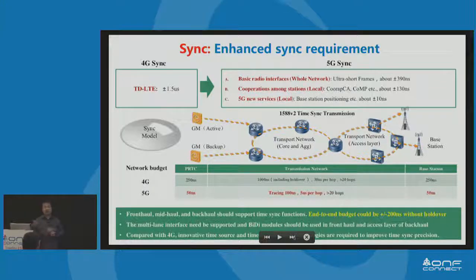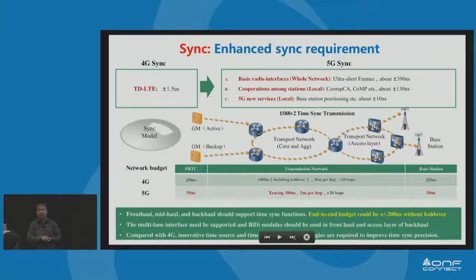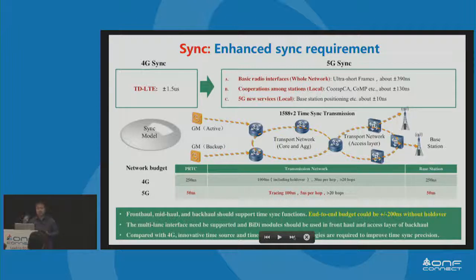Synchronization is really important for 5G. Through SPN we can provide 5 nanoseconds per hop because at layer one we have timestamp functions. For the end-to-end we can provide less than 100 nanoseconds time error. That means for the base station we don't need a GPS module — we distribute synchronization through the transport network.